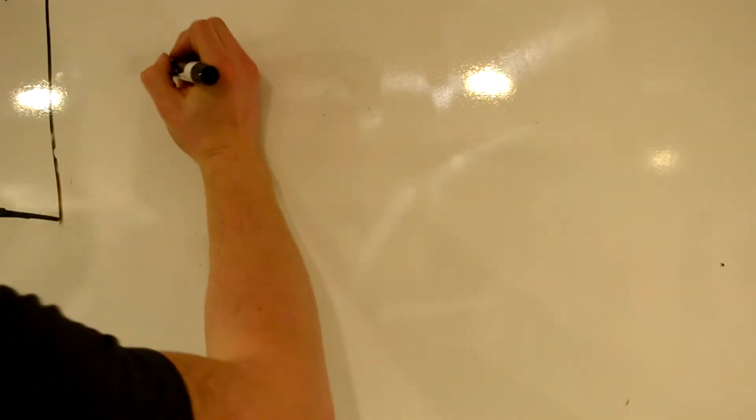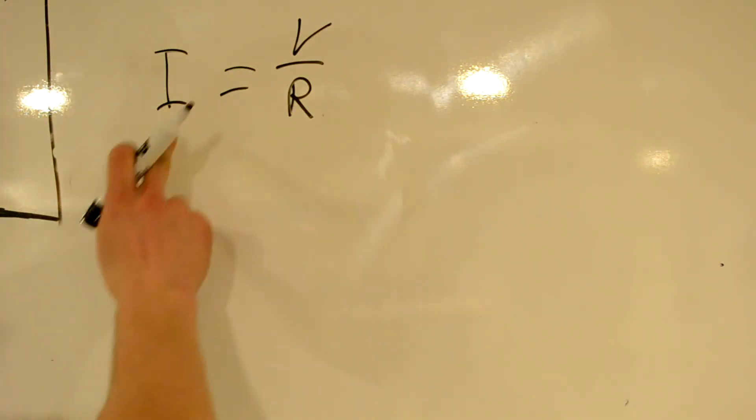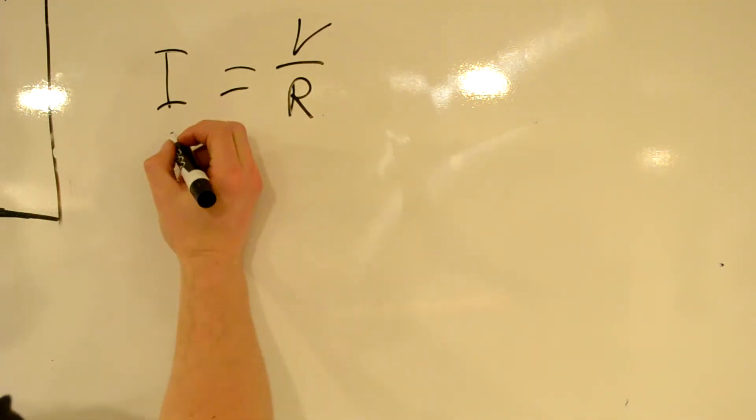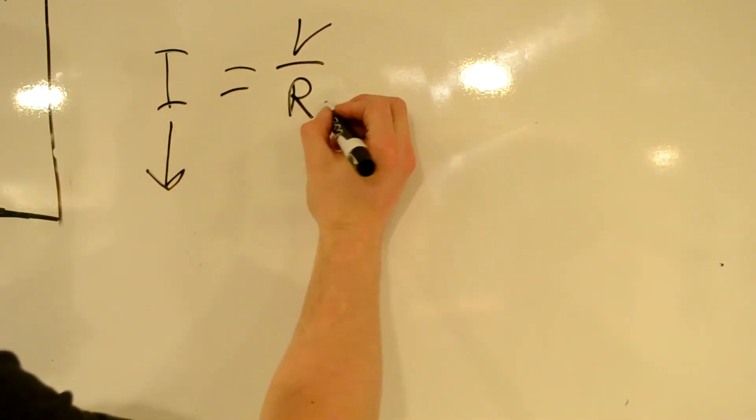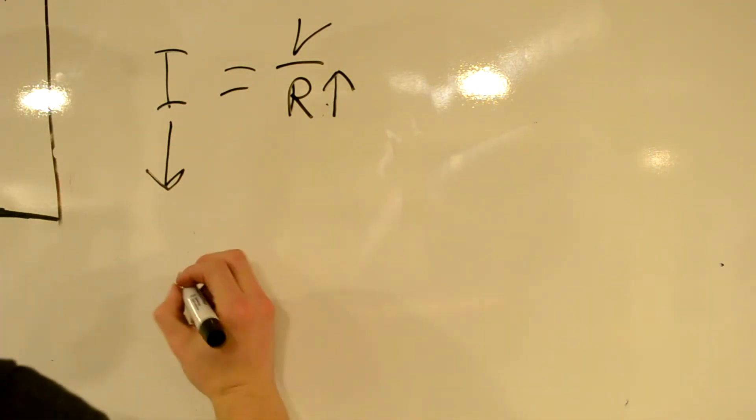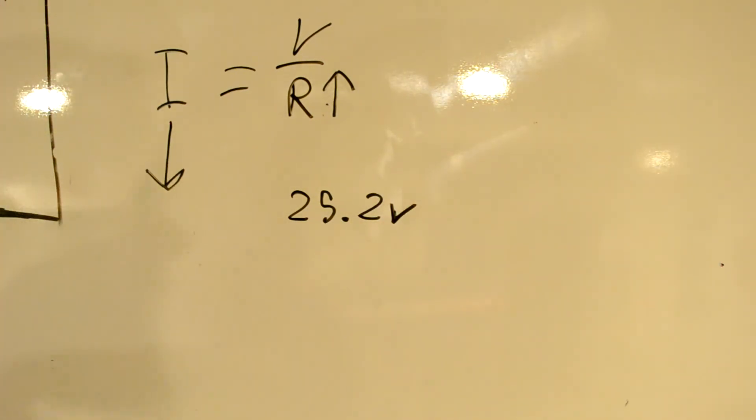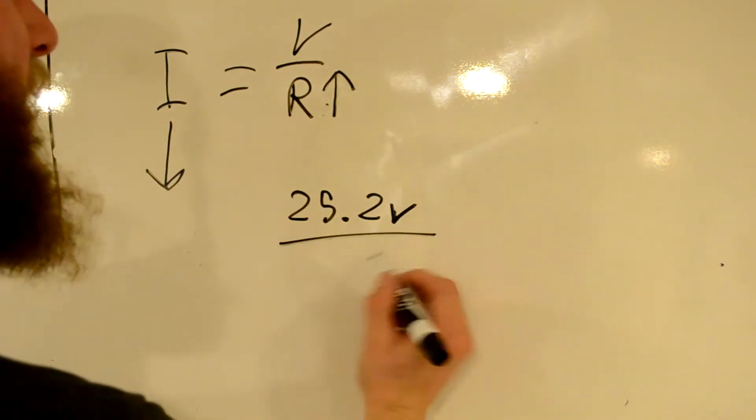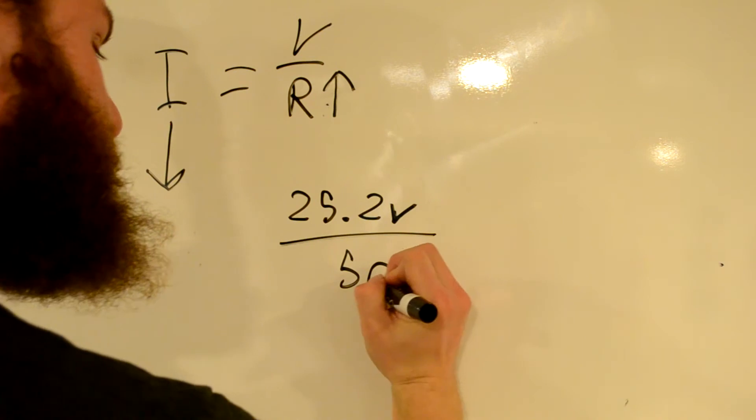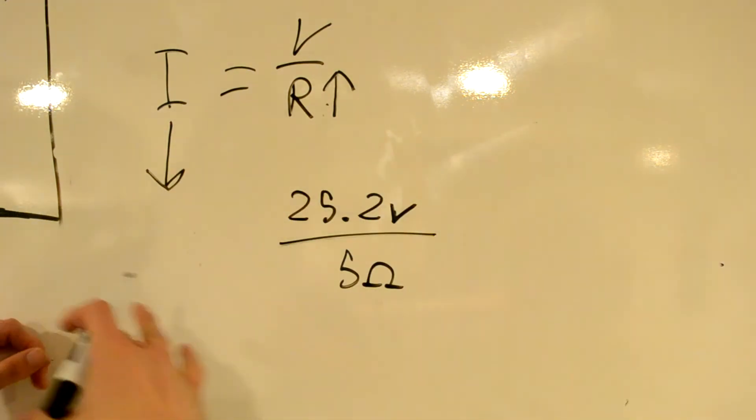So remember this equation. I equals V over R. If we want I to be lower, R needs to be higher. So let's try this. Volts equal 25.2 volts. Now let's say we increase that by a couple factors of 10. So 25.2, let's say we divide that by 5 ohms. So we've increased the resistance of that whole circuit significantly.